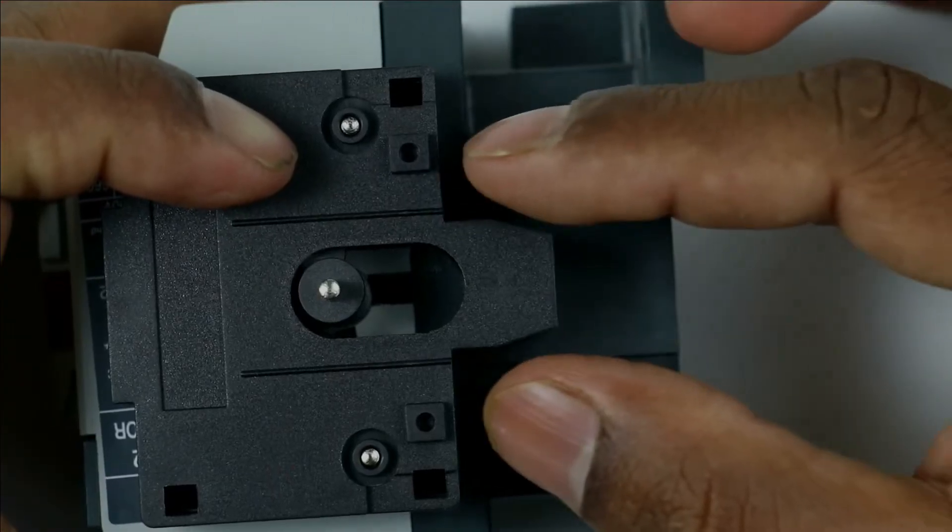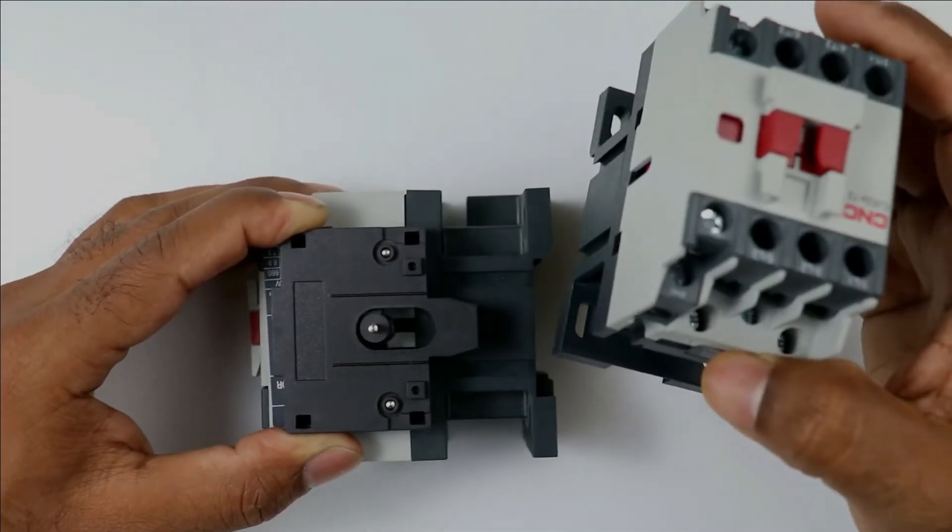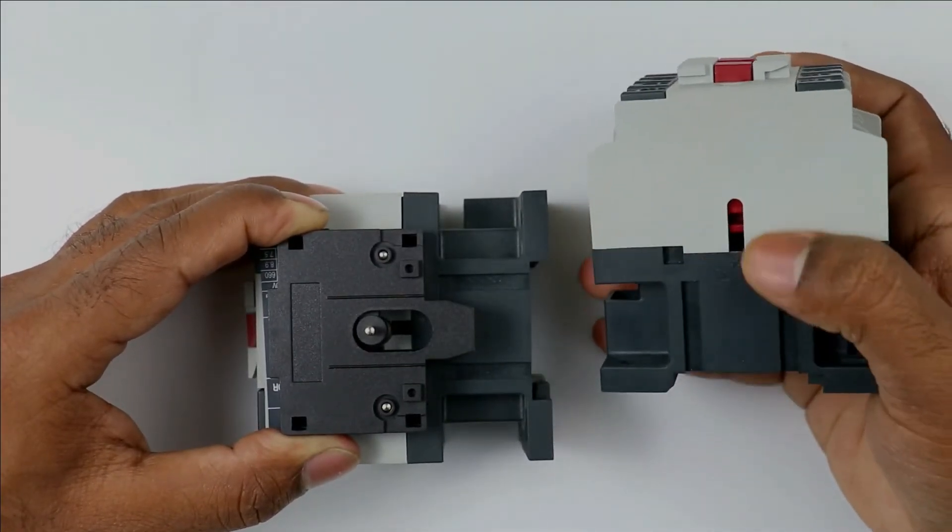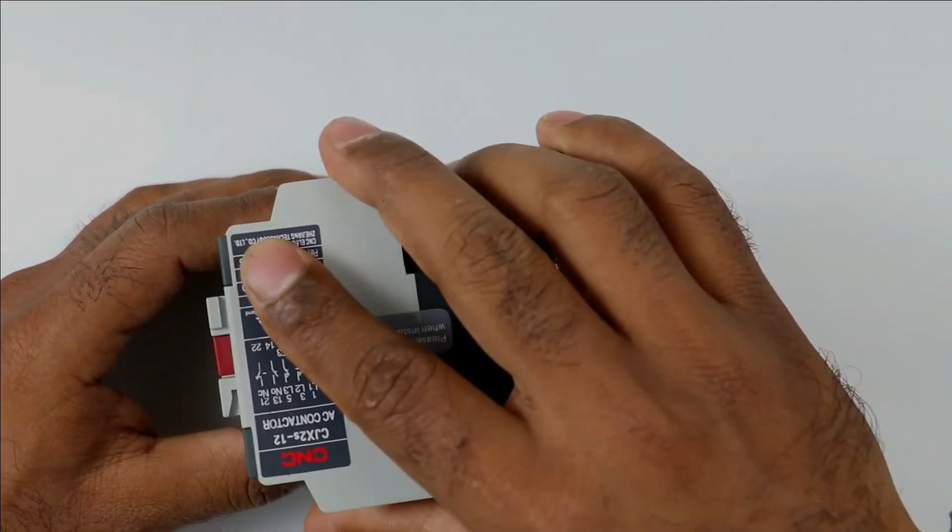Keep one thing in mind this side should be downwards. At the upper side it should be flat. Take the other contactor and look at this side. After removing the sticker mount the contactor with this lever present here. So I am mounting this.